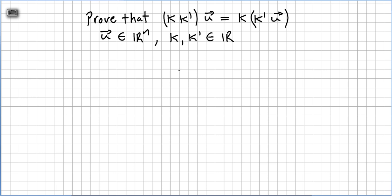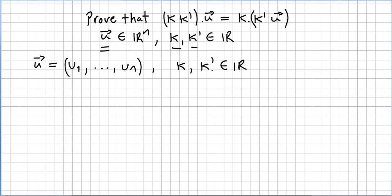This video is on the course of linear algebra, specifically the chapter of vectors in vector spaces. We are doing a series of proofs on vectors and scalars. We are now asked to prove that (k times k') times vector u equals k times (k' times vector u), where k and k' are real numbers — scalars — and u is a vector in the vector space Rn. For our proof we are only going to use the basic definitions of vectors, scalars, and scalar multiplication.